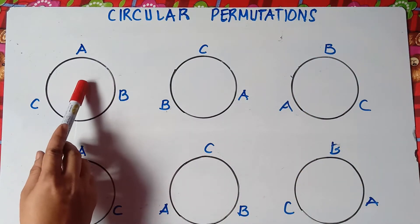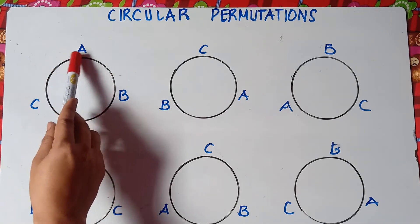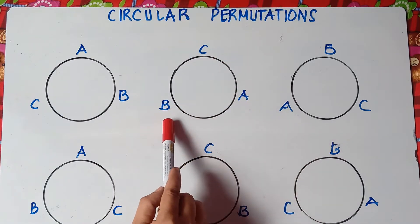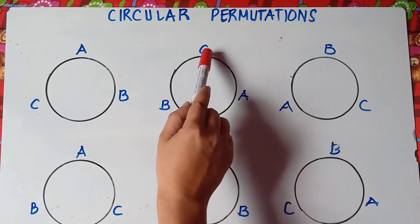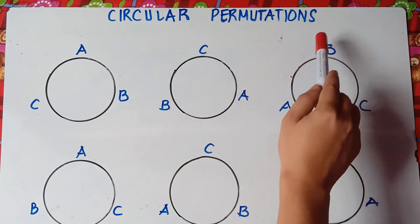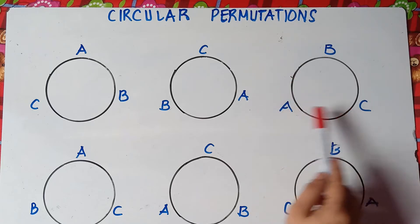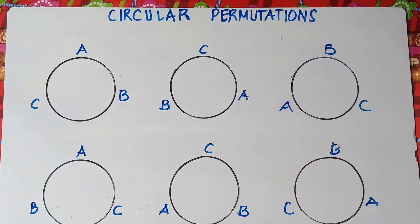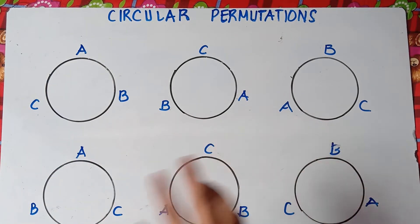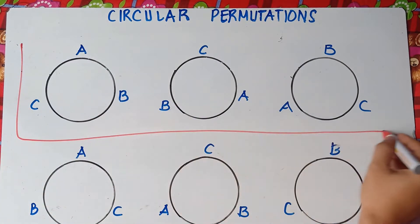Look at the first circle — B is on the right side of A and C is on the left side of A. On the second circle, I just rotate this one clockwise. B is still on the right side of A and C is on the left side of A. Same scenario on the last circle. If you try to analyze this, these three circles are counted as one — they are just the same.